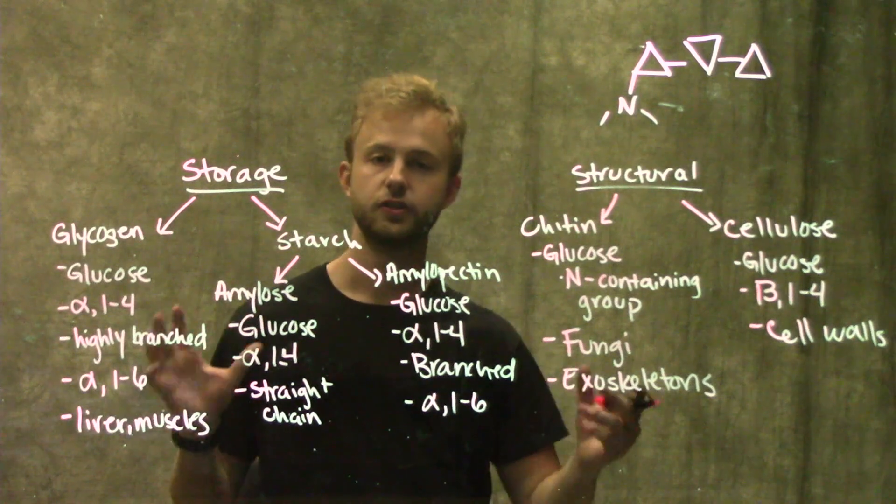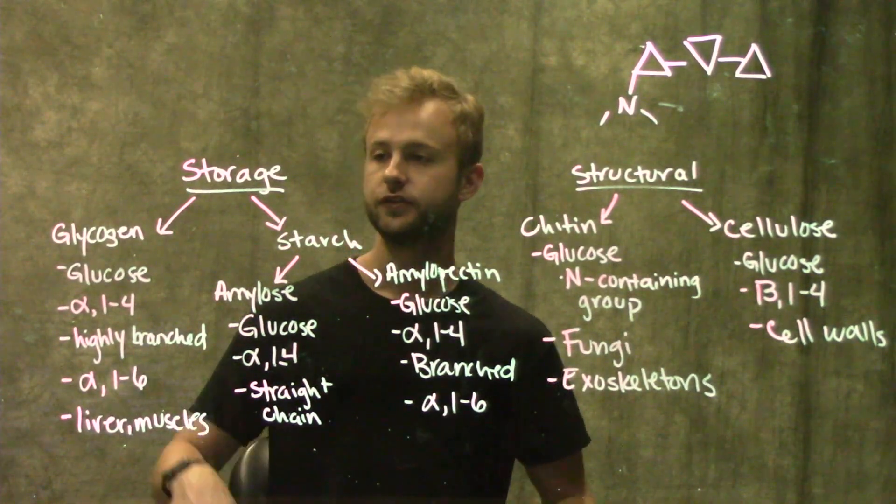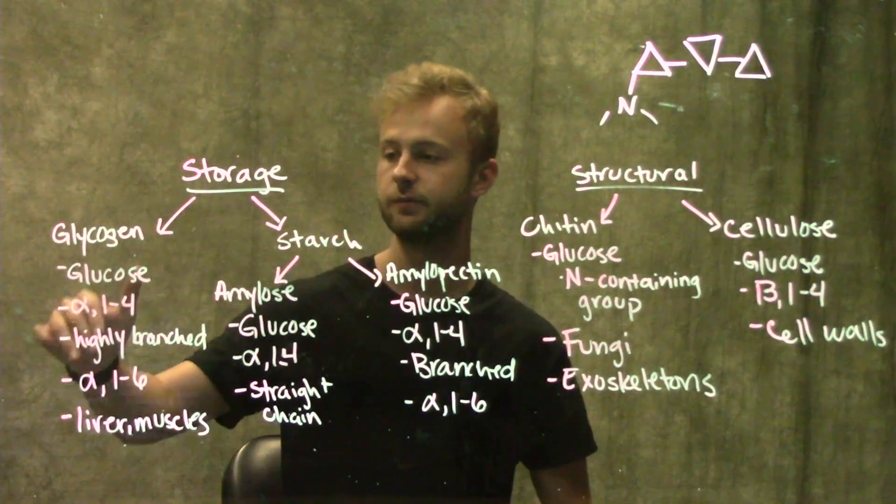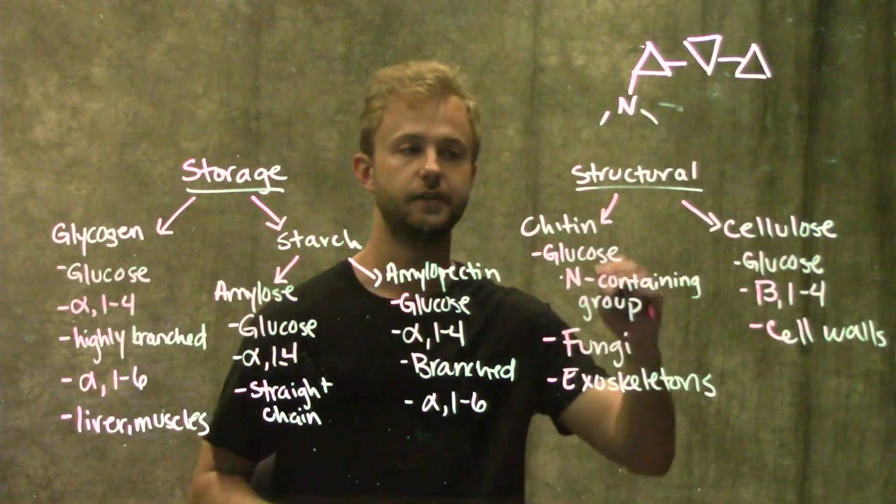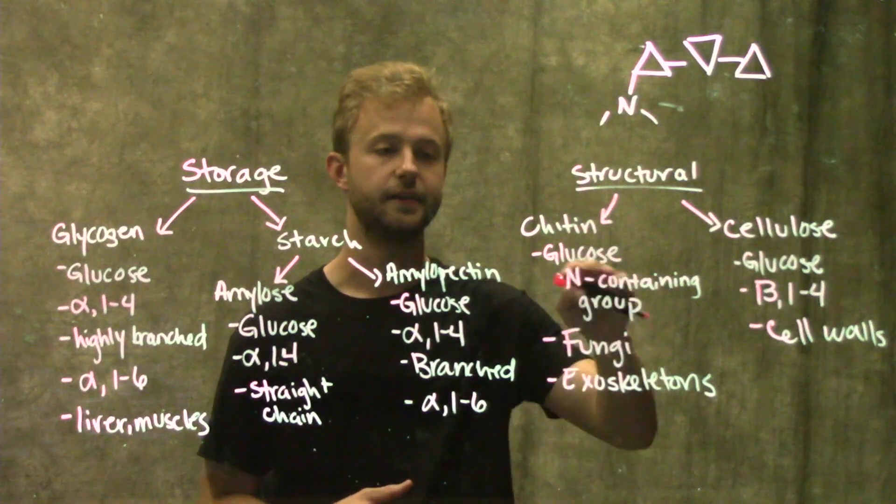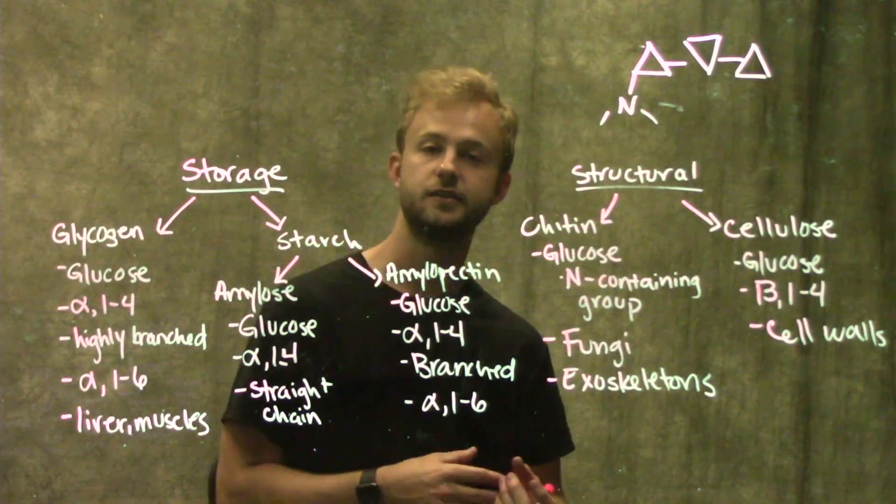These are the major polysaccharides you need to know for freshman biology. To review: you have storage and structural polysaccharides. In storage in animals, we have glycogen. In plants, we have amylose and amylopectin. In structural, we have cellulose in most plants, and chitin in fungi and in exoskeletons of insects.